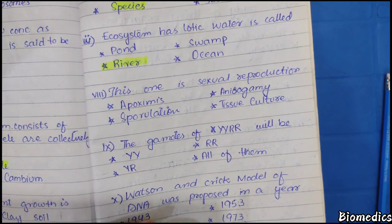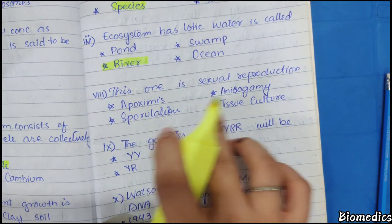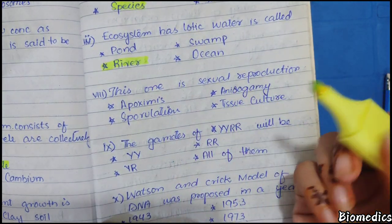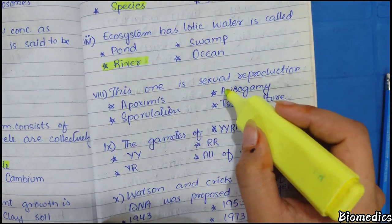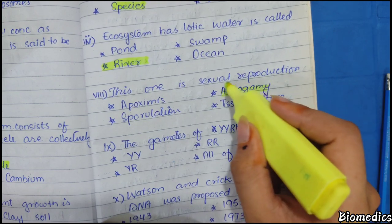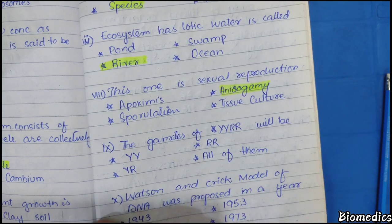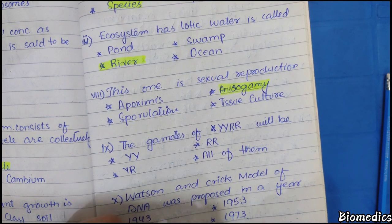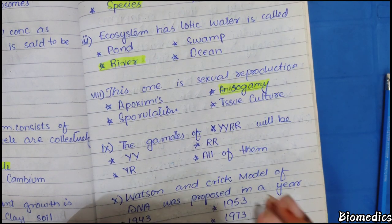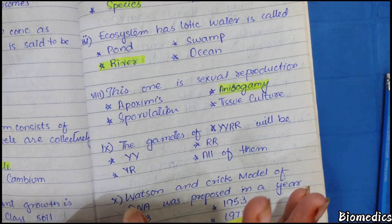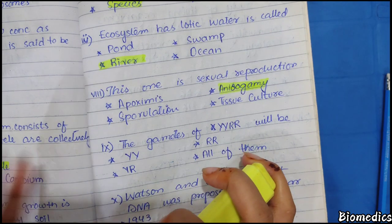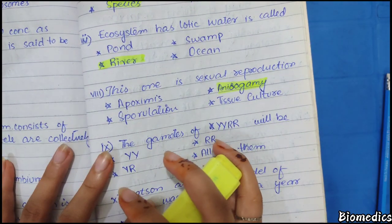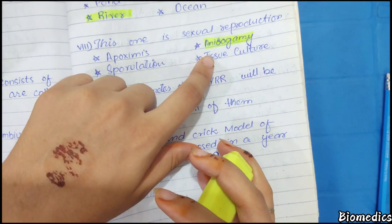Next is about sexual reproduction. Which type of reproduction is isogamy? Isogamy is when structurally and morphologically similar but physiologically different gametes combine to produce reproduction. This is a sexual process.